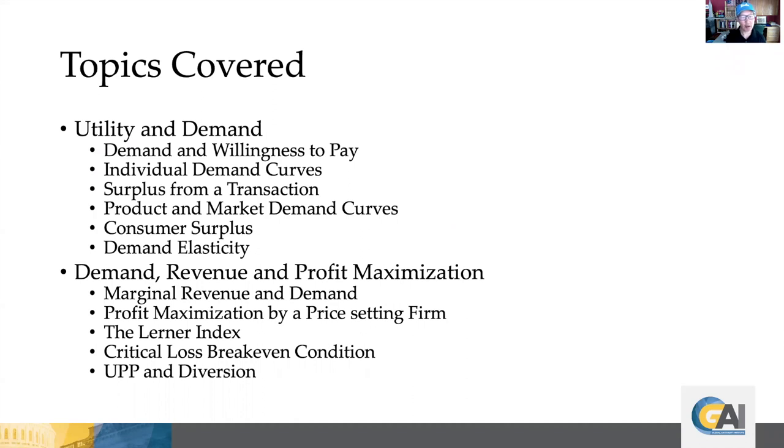We'll then look at demand, revenue, and profit maximization from the firm side. We'll look at marginal revenue and its relationship to demand. We'll look at profit maximization by a price-setting firm. We will define the Lerner Index and derive its relationship to elasticity. And we'll have two applications of demand applied to critical loss and its break-even condition. And we'll also do a short session on UPP and diversion, upward pricing pressure.